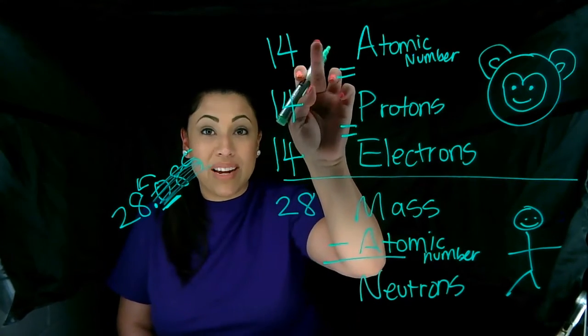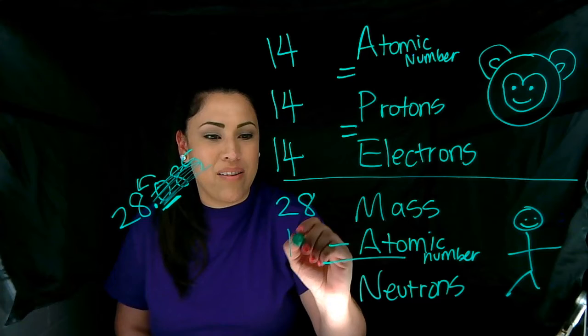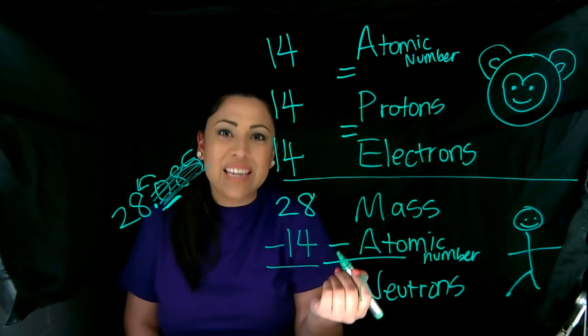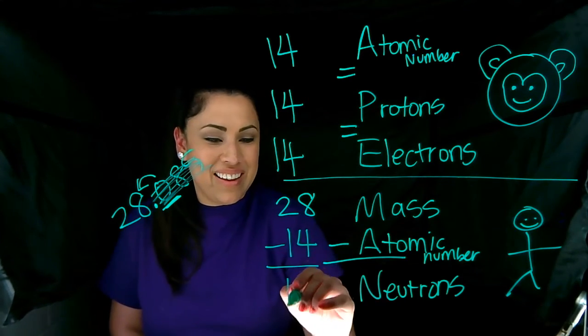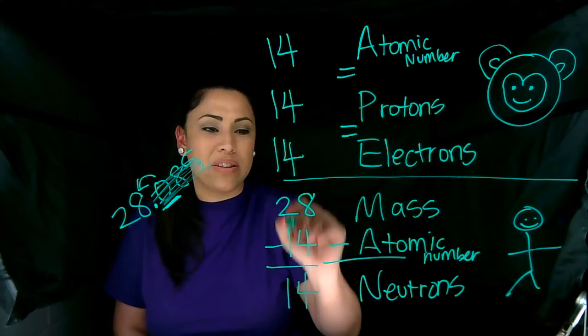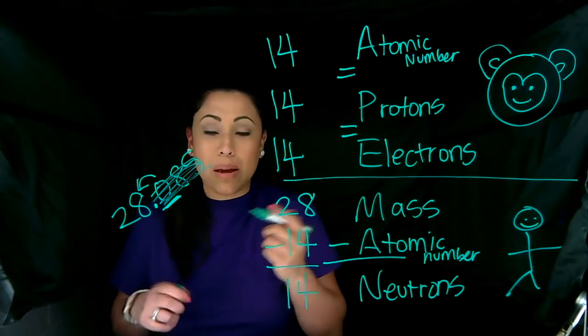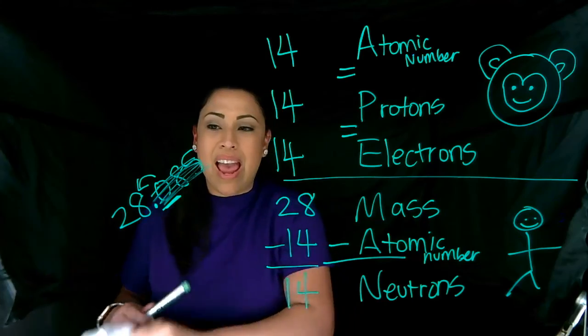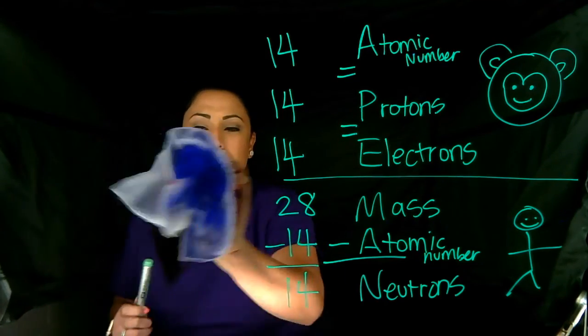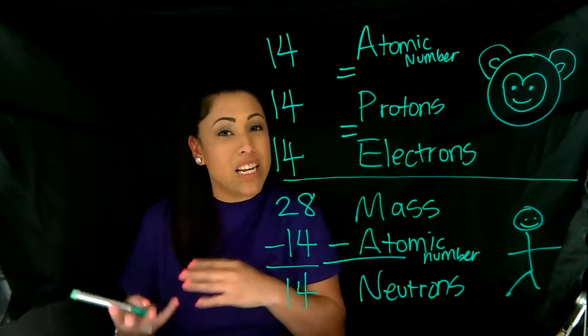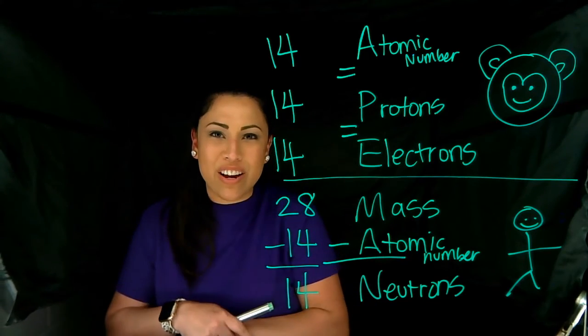And what was our atomic number again? 14. How many neutrons does silicon have? This one was a little easy. These are not always going to be equal, but sometimes it works out that way. And that is how you figure out how many protons, neutrons, and electrons each atom has using the periodic table.